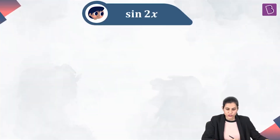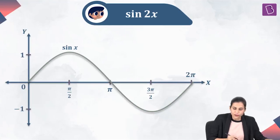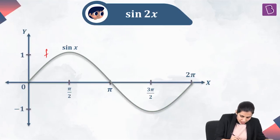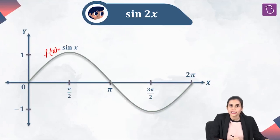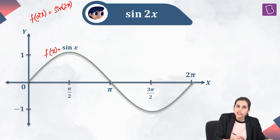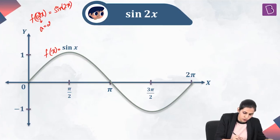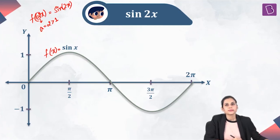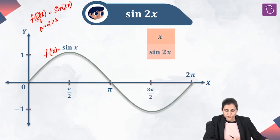We'll understand the answer to this question from an example. I have the graph of f(x) = sin x. I am interested in plotting the graph of f(2x), which is sin(2x). Here, my a is equal to 2, which is greater than 1. Let's use the conventional method to plot this graph.